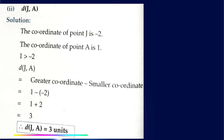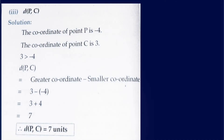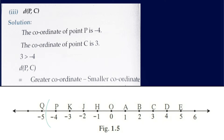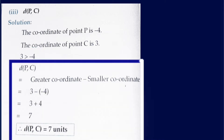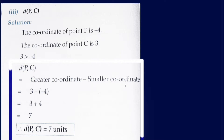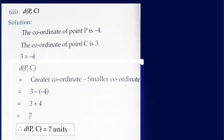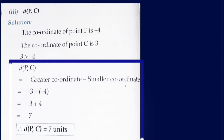So 1 plus 2 equals 3. Therefore the distance between point J and point A is 3 units. The third one is the distance between point P and point C. The coordinate of point P is minus 4 and the coordinate of point C is 3. Since 3 is greater than minus 4, the distance between P and C equals 3 minus (minus 4), which equals 3 plus 4, equals 7.